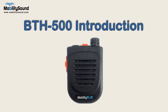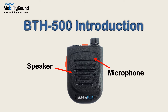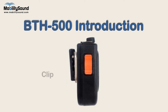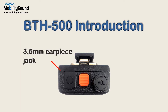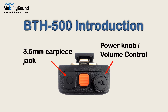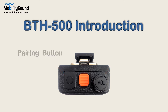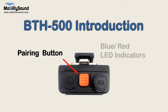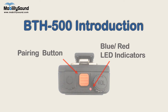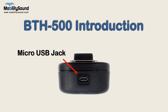The BTH500 has a speaker, microphone, clip, push-to-talk button, 3.5mm earpiece jack, power knob, volume control, pairing button, blue and red LED indicators, and Micro-USB jack.